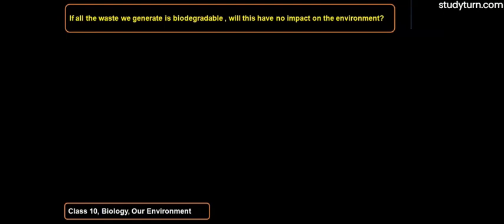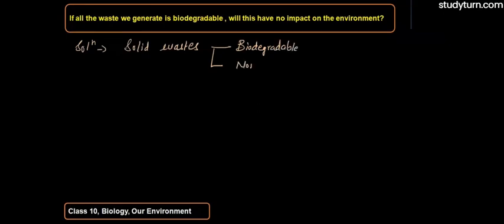Let us see the answer to this question. Solid waste is of two types: one is biodegradable and the other is non-biodegradable. Biodegradable waste is waste that can be easily broken down naturally.